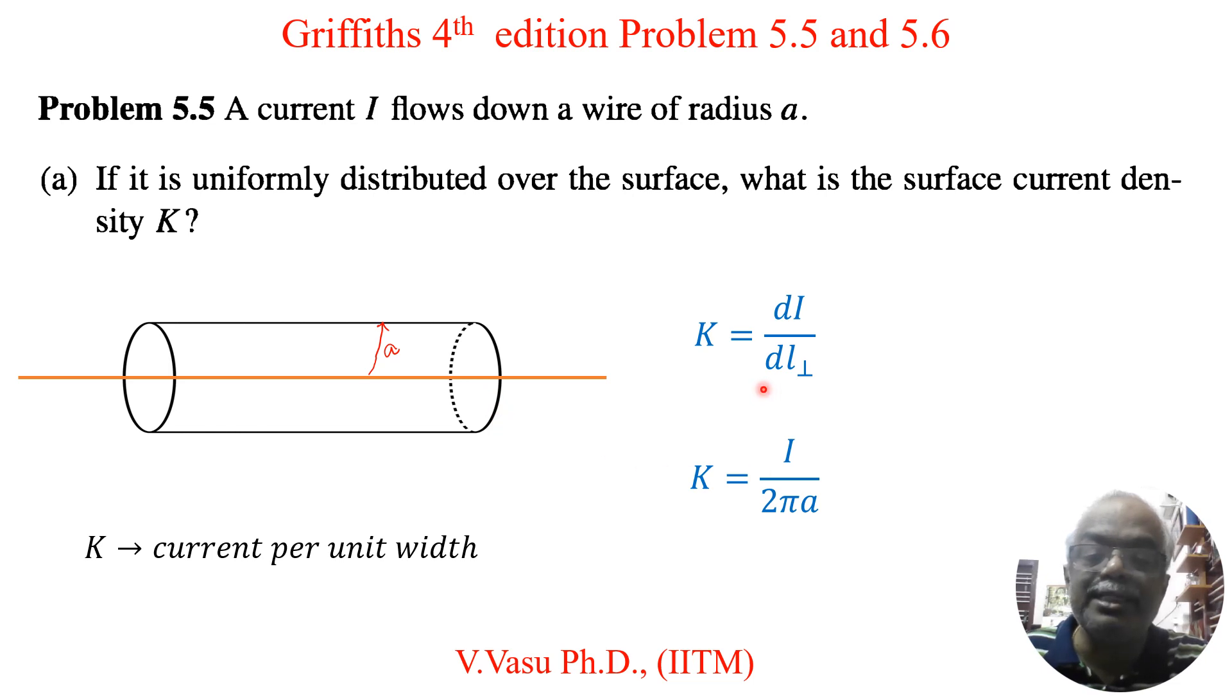So dl, that dl is equal to 2πA. This i, dI is I and dl perpendicular is 2πA. So the K value is equal to I divided by 2πA. This is about part A.